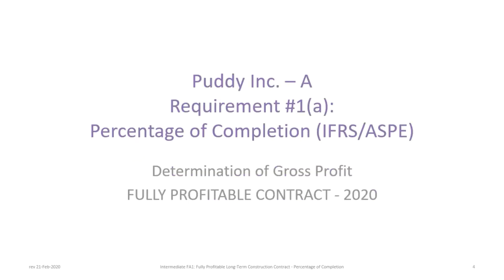Our example contains three years of data from 2020 through 2022. We will progress through that example year by year, beginning with requirement A, where we will determine the gross profit of a fully profitable contract for the year 2020.